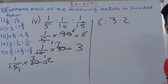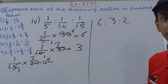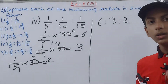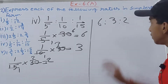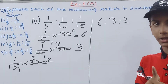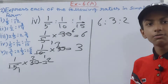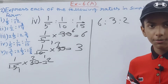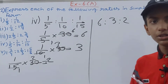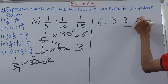We get 6 : 3 : 2. Now, although we can simplify some pairs individually, all three numbers must be simplified by one single common factor. Here, there is no single number that divides all three at once, so we leave it as 6 : 3 : 2 as our final answer.